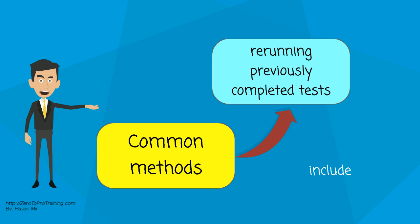Common methods of regression testing include re-running previously completed tests and checking whether program behavior has changed and whether previously fixed faults have re-emerged.